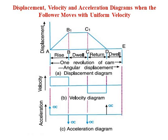The y-axis represents the displacement, velocity, or acceleration of the follower. Since the follower moves with uniform velocity during its rise and return stroke, the slope of the displacement curve must be constant. In other words, the segments AB1 and C1D must be straight lines. The dwell periods — when the follower is at rest with no direct contact with the cam — are shown by lines B1C1 and DE in the displacement diagram.